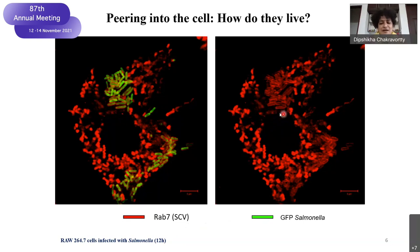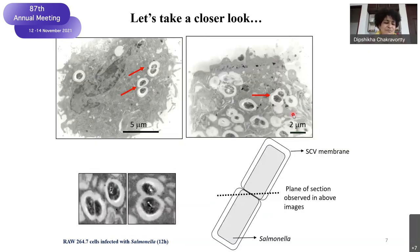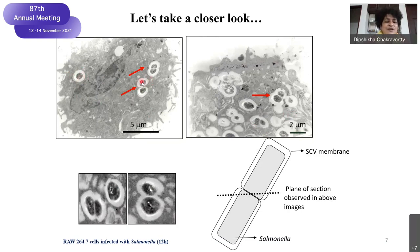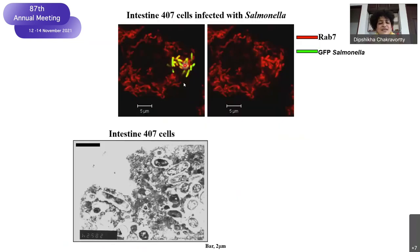Let us take a much closer look with electron microscopy to confirm that yes, indeed, Salmonella stays within the vacuole. This is the SCV. When Salmonella is dividing, the vacuole is also dividing — this is the dividing vacuole, depending on what plane you cut your section. It may look round, but Salmonella is rod-shaped — that is just the plane of section. The vacuole divides along with Salmonella, leading to a single bacterium per vacuole.